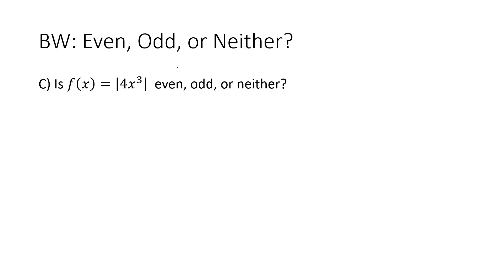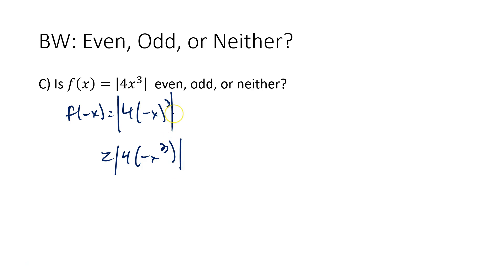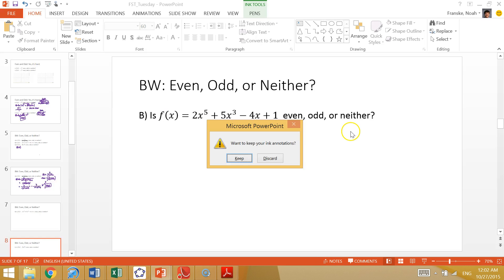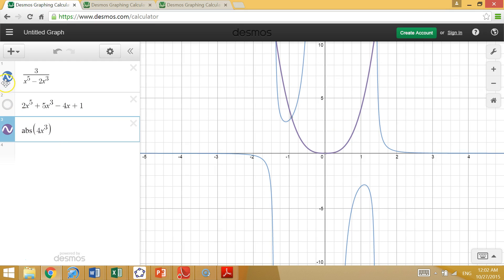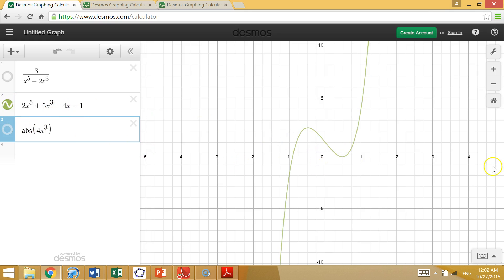Moving on to another one — even, odd, or neither? We plug in f(-x) = |4(-x)³|. Negative x cubed preserves the negative sign, so we have |4(-x³)| = |-4x³|. Now, the absolute value bars take that negative and turn it positive — whether it's negative or positive to begin with, it makes it positive. So we have |4x³|, which is our original function. That means it's even. Looking at the graph, we see a nice parabola-looking shape — indeed an even function with y-axis symmetry.